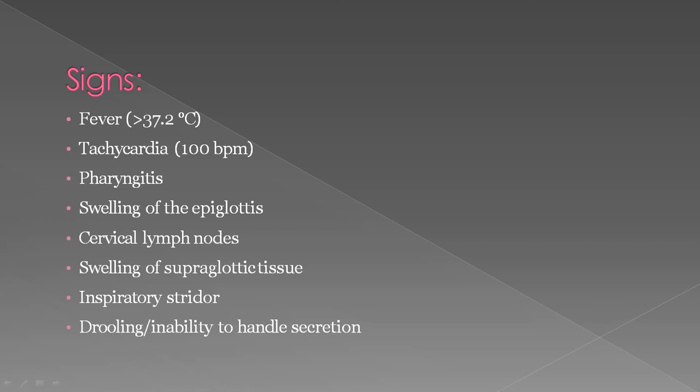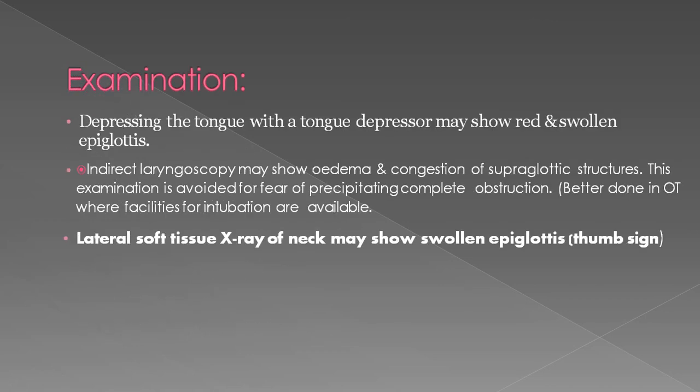Drooling and inability to handle secretions are also seen. On examination, depressing the tongue with a tongue depressor may show a red and swollen epiglottis. Indirect laryngoscopy may show edema and congestion of supraglottic structures, but this examination is avoided for fear of precipitating complete obstruction and is best done in the OT where intubation facilities are available.